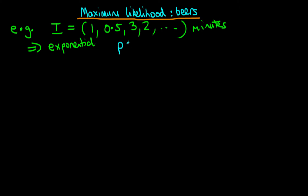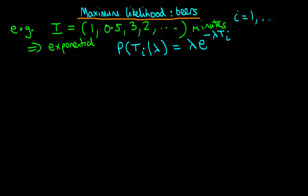We found in the previous video that the probability density function is given by lambda times e to the power minus lambda ti, where ti is one of the individual waiting times and i is an index running from 1 up to n. That's the PDF for a single observation. Now what does it look like for a vector of our observations?